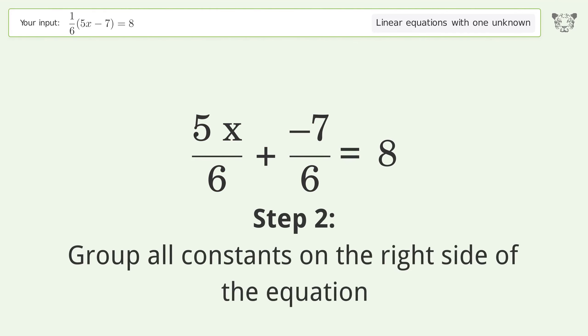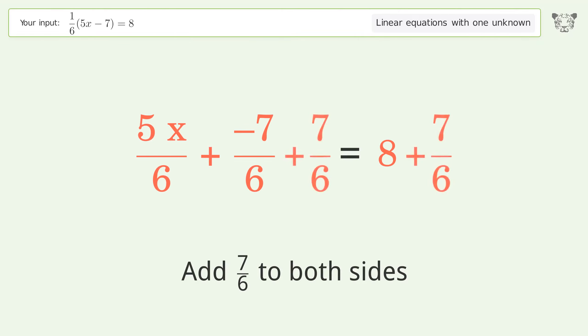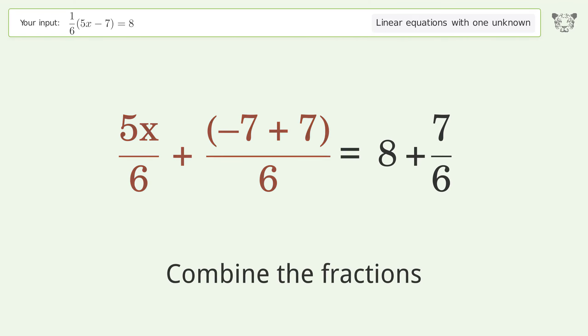Group all constants on the right side of the equation. Add 7 over 6 to both sides. Combine the fractions. Combine the numerators.